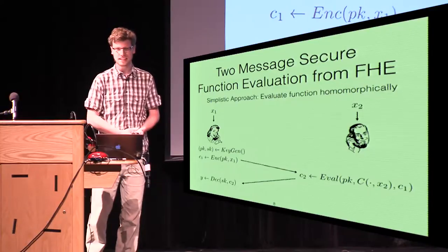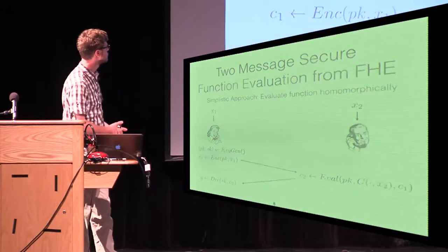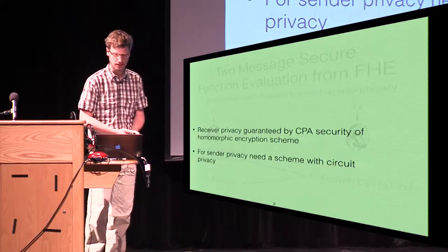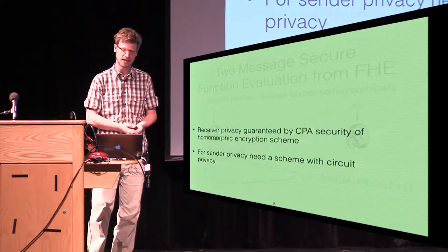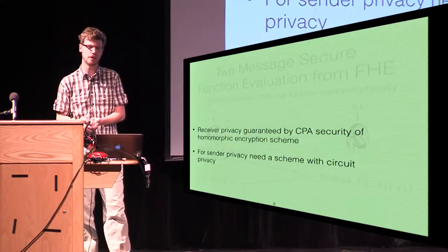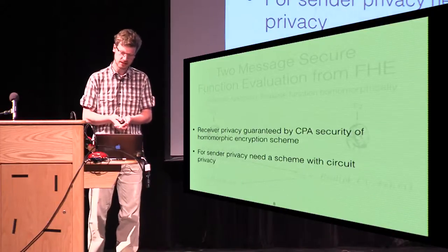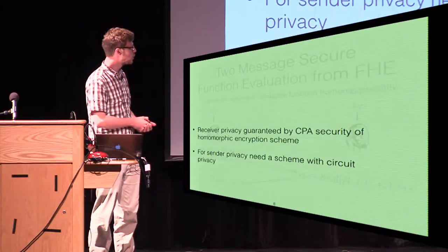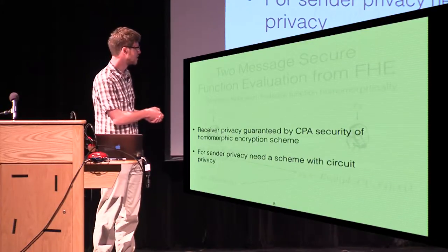This is an intriguingly simple protocol, and of course the natural question is: what security does it offer? If we use a fully homomorphic encryption scheme with IND-CPA security, the privacy of the receiver's input is guaranteed by CPA security. But for sender privacy, we need a slightly different property called circuit privacy, which guarantees that the ciphertext C2 that the receiver obtains encodes no information about the circuit C, and thus the input X2 that Bob used to compute C2.